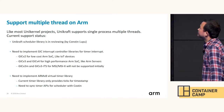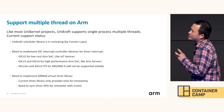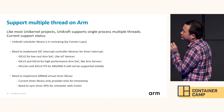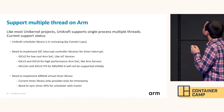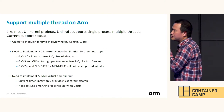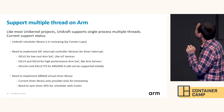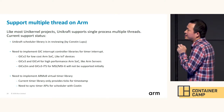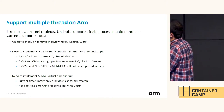We have to implement GICv2 for low-cost ARM SoCs like IoT devices, and GICv3/GICv4 for high-performance ARM SoCs like ARM servers. Device pass-through is currently not in our roadmap, so GICv2M and GICv3 ITS for MSI and MSI-X will not be supported initially.